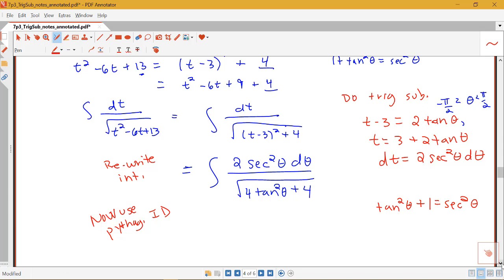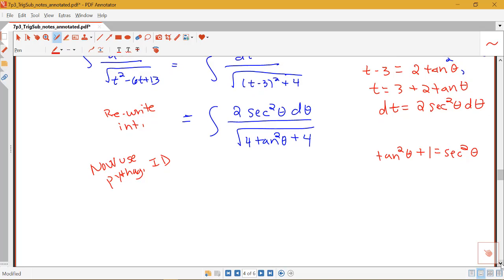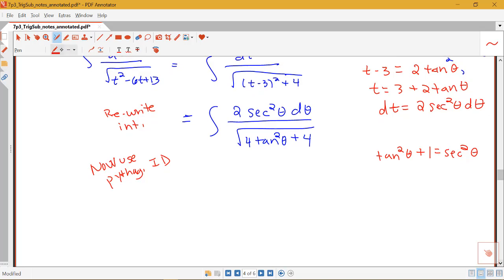So I've got under my square root here, 4 tan squared theta plus 4. I could come over to the side and just do a little bit of algebra with that. I could say 4 tan squared theta plus 4 equals 4 times tan squared theta plus 1. And then I know that this tan squared theta plus 1 here is secant squared. So I can replace 4 tan squared theta plus 4 with 4 secant squared theta.